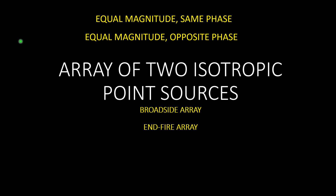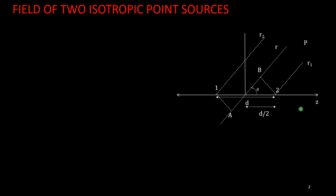We will be looking at an array of two isotropic point sources — specifically, what happens to the electric field if we have two antennas. We will also look into special cases of the broadside array and the endfire array.